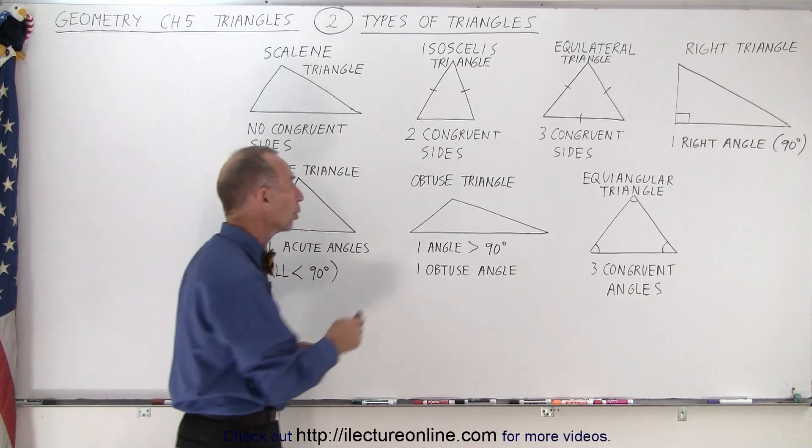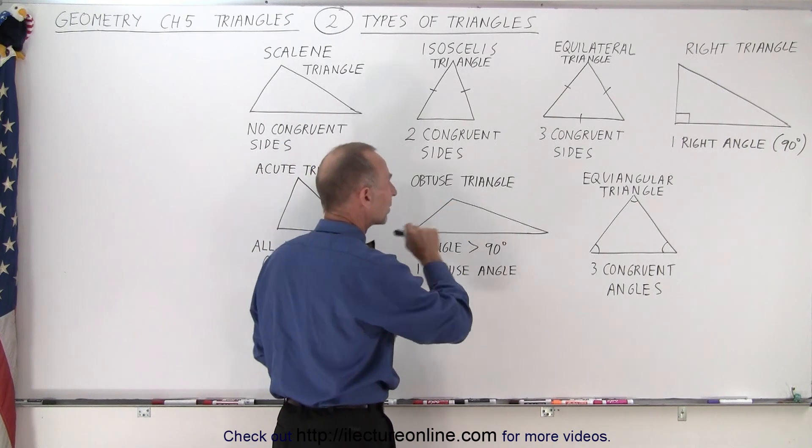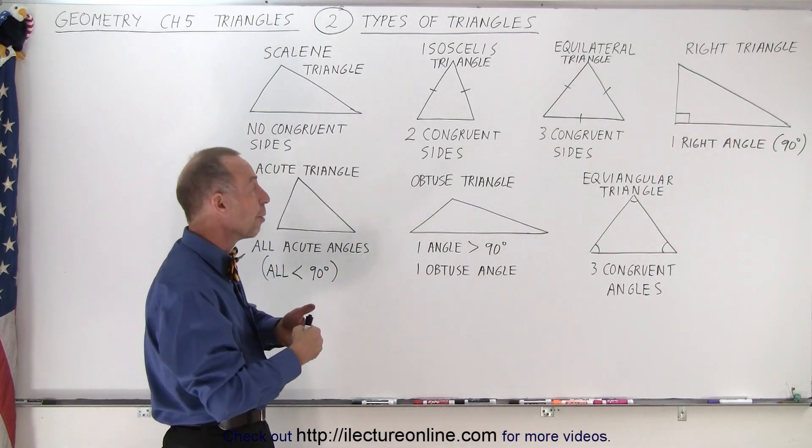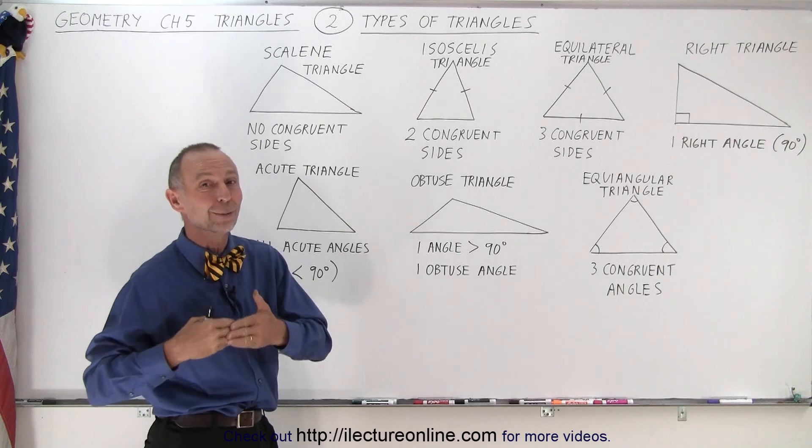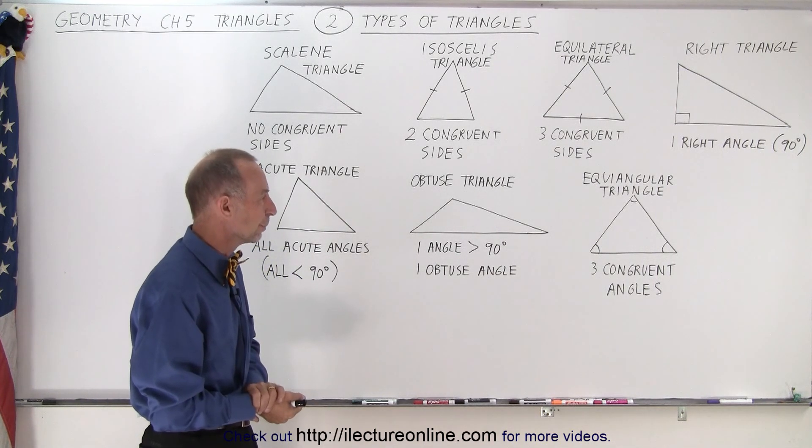We have what we call an obtuse triangle where one of the three angles, in this case this one, is greater than 90 degrees and that's called an obtuse angle. There's no way you can ever have more than one angle being obtuse because then you end up with more than 180 degrees and you can't violate that rule.